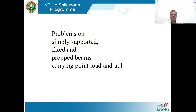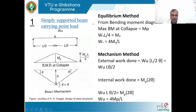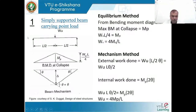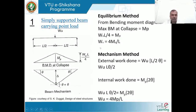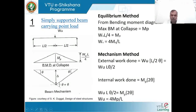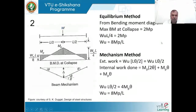Let us now look at some simple problems on ultimate load carrying capacity. Problem 1 — already discussed in the previous class — is a simply supported beam with a central concentrated load, giving W = 4M_P/L, whether you use the static method or kinematic method. For the same problem but with both ends fixed, W = 8M_P/L, which is 100% more.